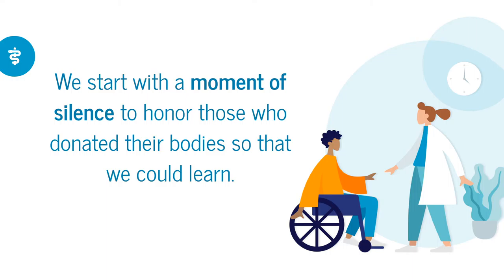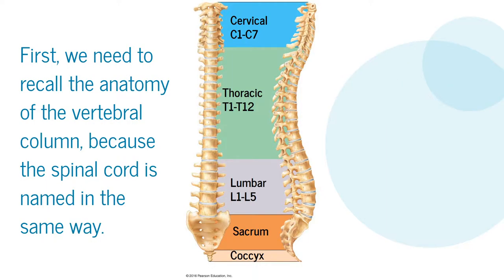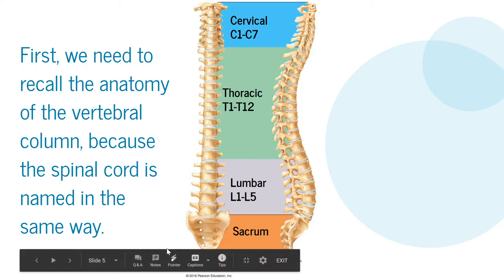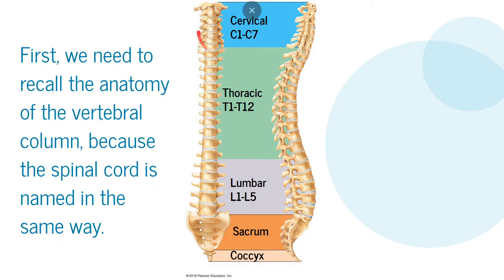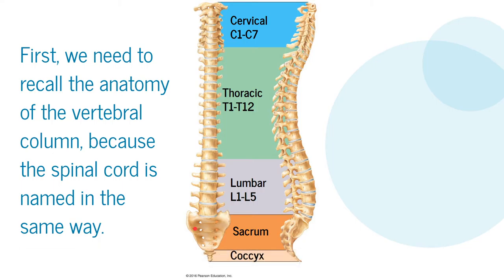Let's start by reviewing some background information about spinal cords. First we need to recall the anatomy of the vertebral column, because the spinal cord is named in the same way. Our head is up here; the top vertebrae are the cervical — the top seven — then the thoracic, where our ribs attach, the next 12, and then our low back is the lumbar. At the bottom we have the sacrum and the coccyx. You can remember 7, 12, and 5 because of breakfast, lunch, and dinner.